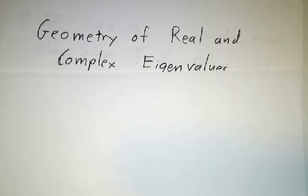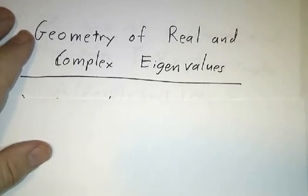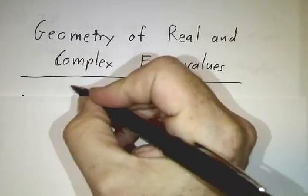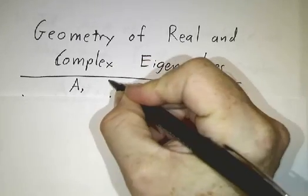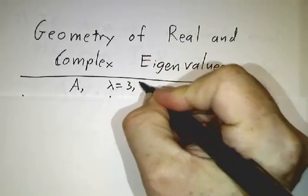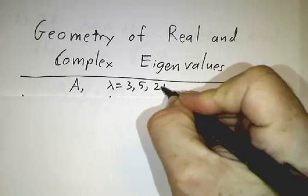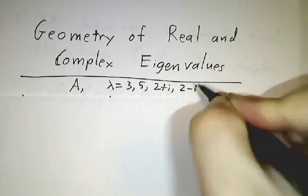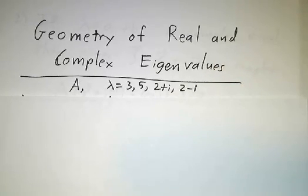In this video, we're going to talk about the geometry of eigenvalues, both real and complex. For example, suppose I give you a matrix A, and I tell you that its eigenvalues are 3, 5, 2+i, and 2-i. Just from knowing the eigenvalues, what can you tell me about the matrix?